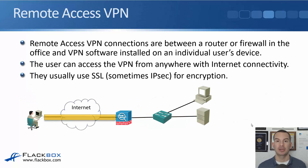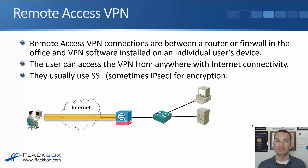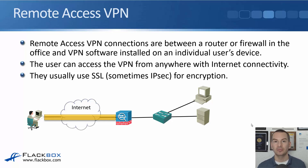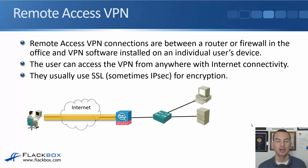A remote access VPN connection is between a router or firewall in the office and VPN software installed on an individual user's device. For example, Cisco AnyConnect is a VPN client software. The user can access the VPN from anywhere with internet connectivity — working at home, in a hotel, or in an internet cafe — and this allows them to access their private files in the office over that VPN connection. For remote access VPN, that usually uses SSL, which is Secure Sockets Layer, or IPSec for encryption.